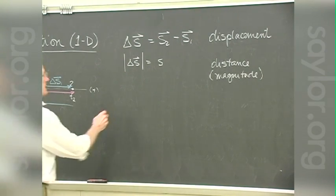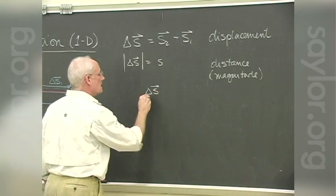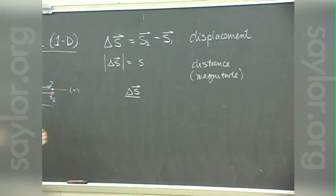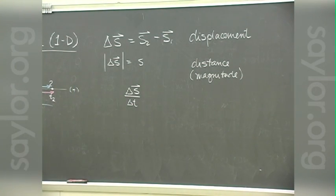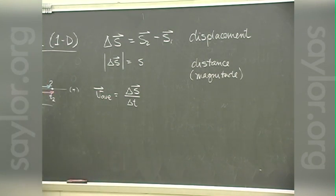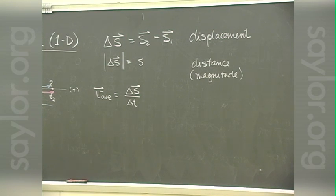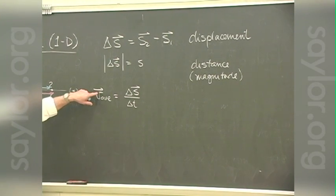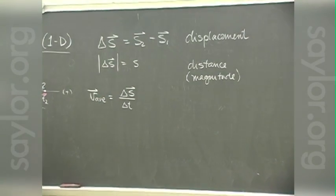Once we've done that, we're interested in how fast this displacement is occurring, so we divide it by the change in time. That gives us the average velocity — it's average because we're only concerned with position at two discrete time periods and don't care what happened in between.